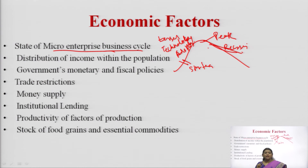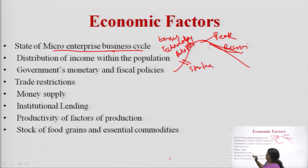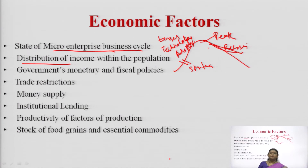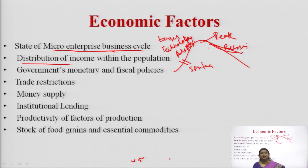The second economic summary factor is distribution of income within the population. In India, income is not evenly distributed — some are well above average and some are below the poverty line. We must closely monitor this distribution when starting a micro enterprise as it directly impacts the business. Third is government monetary and fiscal policy: RBI rules and regulations on taxation, banking, and finance directly impact the need for funds, their utilization, and acquisition.